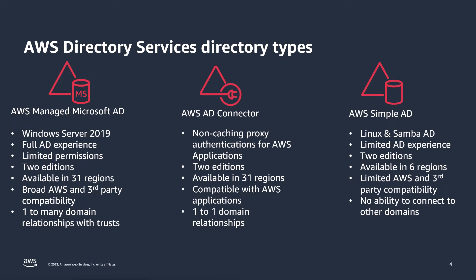We also delegate a subset of permissions outside the OU, which can include DNS server management, group policy management, as well as deploying PKI. It comes in two editions: Enterprise and Standard. The biggest difference is that Enterprise supports up to 500,000 objects, as well as the ability to extend your existing Active Directory into multiple regions.